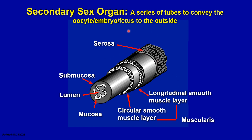This diagram shows the typical layers found in a cross-section of a secondary sex organ — the tubular structure of the female reproductive tract. From the outside, we have the serosa or tunica serosa, followed by the muscle layer, the tunica muscularis, and on the inside, the submucosa, the mucosa, and the lumen. The muscularis has an outer longitudinal smooth muscle layer and an inner circular smooth muscle layer.